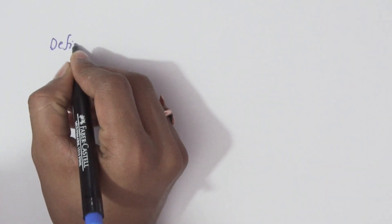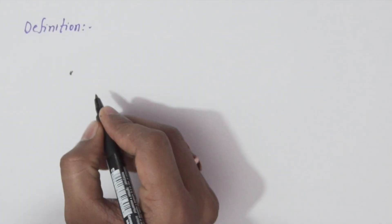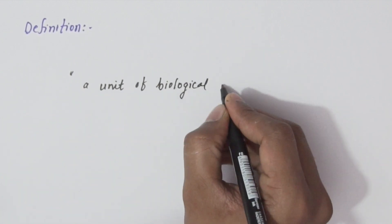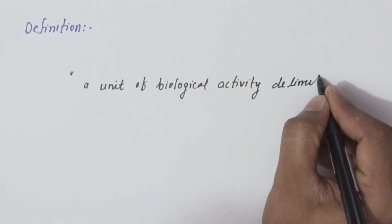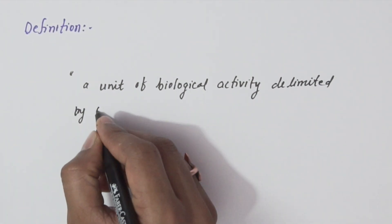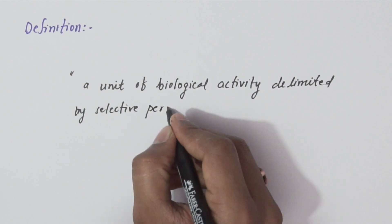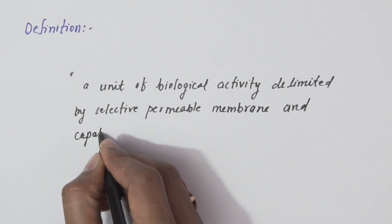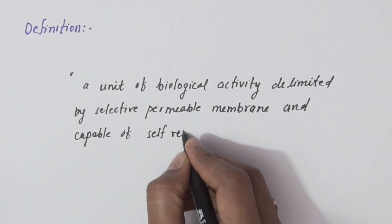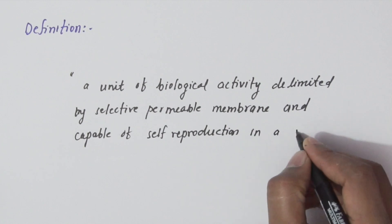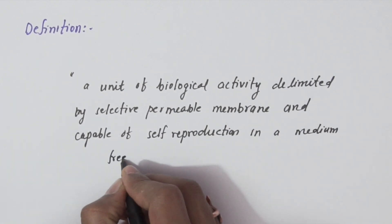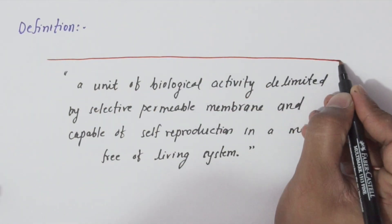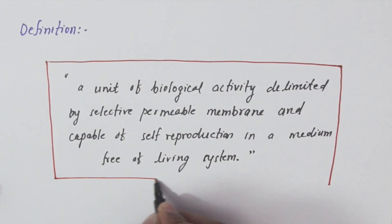So now we will define the cell. The cell can be defined as a unit of biological activity, delimited by a selectively permeable membrane, and capable of self-reproduction in a medium free of other living systems. You can also define a cell in various other ways.